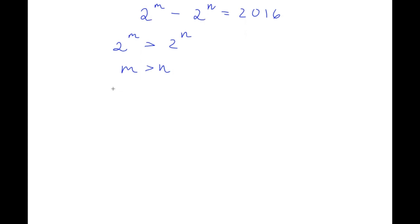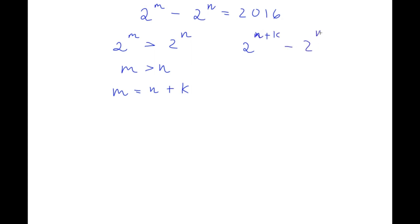So now I'm going to set m equal to n plus some constant k. If I plug in n plus k for m, I have 2 to the power of n plus k, minus 2 to the power of n, is equal to 2016.